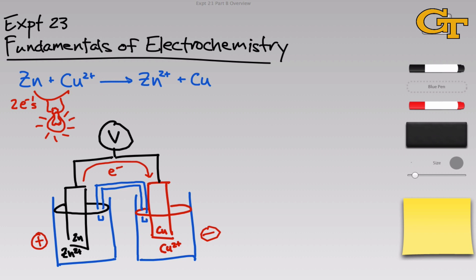I want you to think about the directions that each type of ion will move to balance the flow of electrons through this device. Take a second and think about this before continuing on.